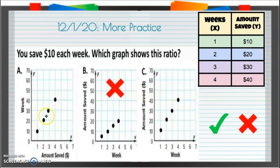Over 4, up 40, yes and yes. So what is different about graph A and C? What's different? Well, they're the same graph except they're labeled differently.